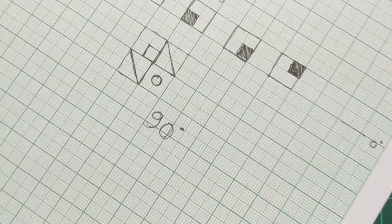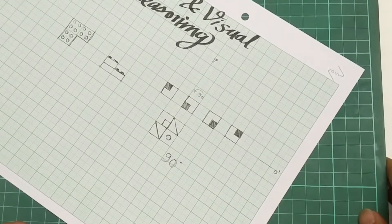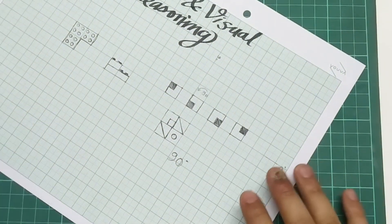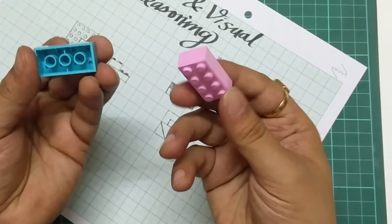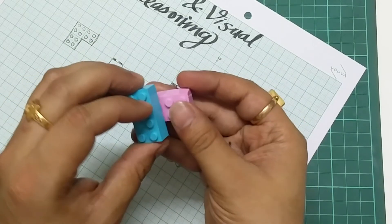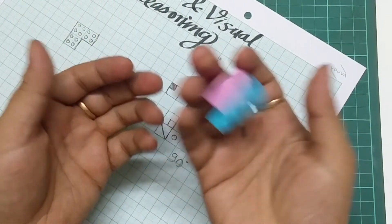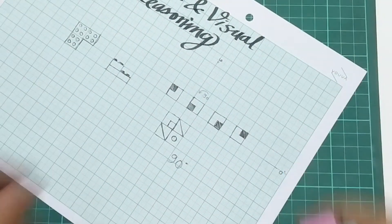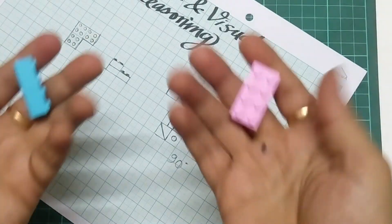You will be able to solve any visual reasoning or spatial reasoning questions. Just take these two things together: try practicing on Lego bricks and try using graph paper. That will be enough.